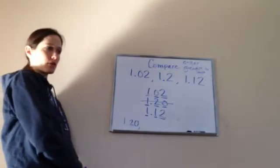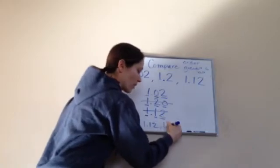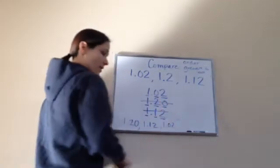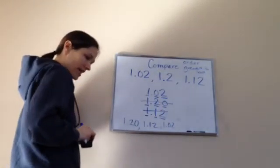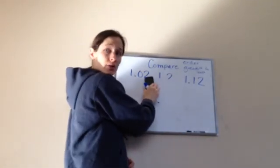Then it would be the third one, this one: 1.12. And then the last one would be 1.02. Okay, so that's how we do lesson 69.